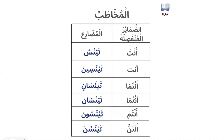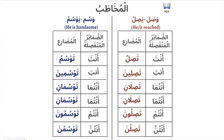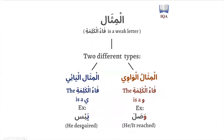So that in a very brief sense is the mithal al-wawi and the mithal al-ya'i. The mithal verb is a verb whose fa-kalima is a weak letter — either a ya or a waw, never an alif because the alif can never begin a word. The mithal al-wawi (e.g., wasala) will sometimes lose its waw in the mudara' (like yasilu, tasilu), while the mithal al-ya'i (e.g., ya'isa) never loses its ya. I hope this is clear.